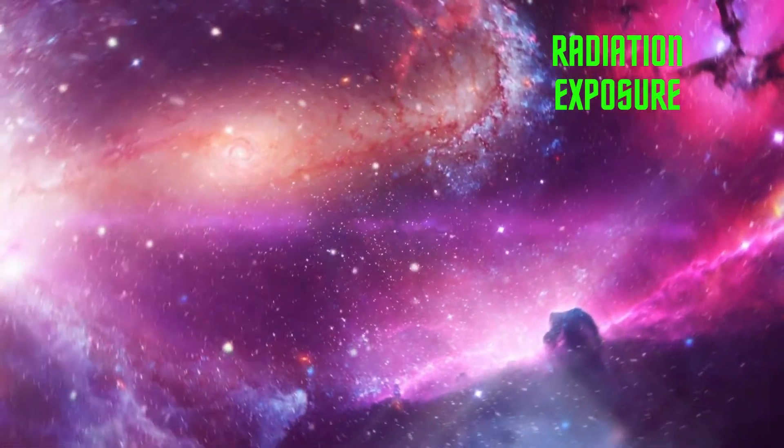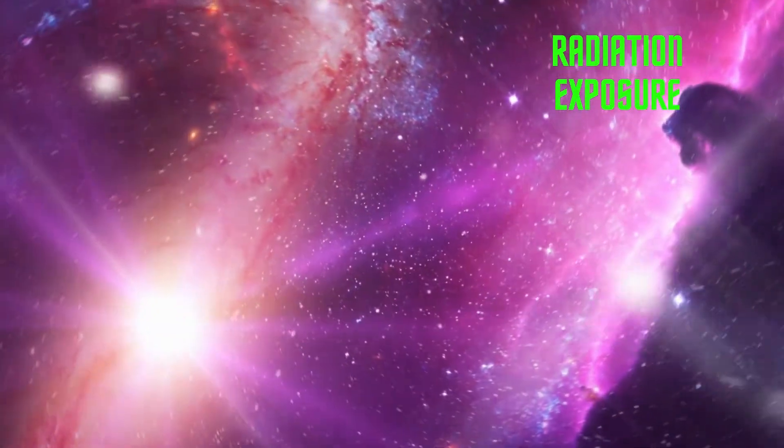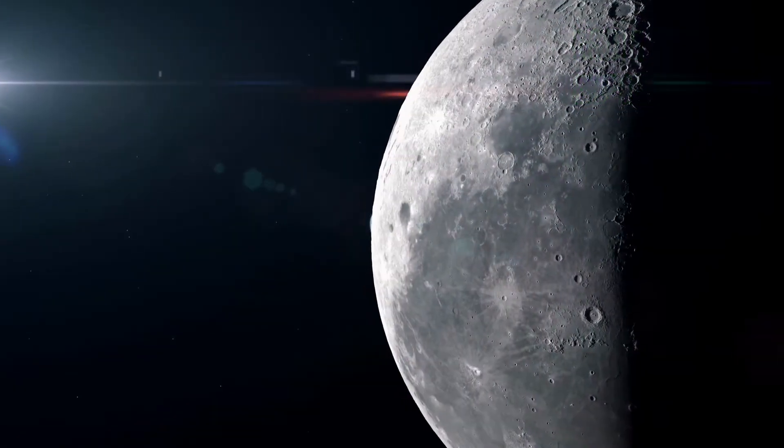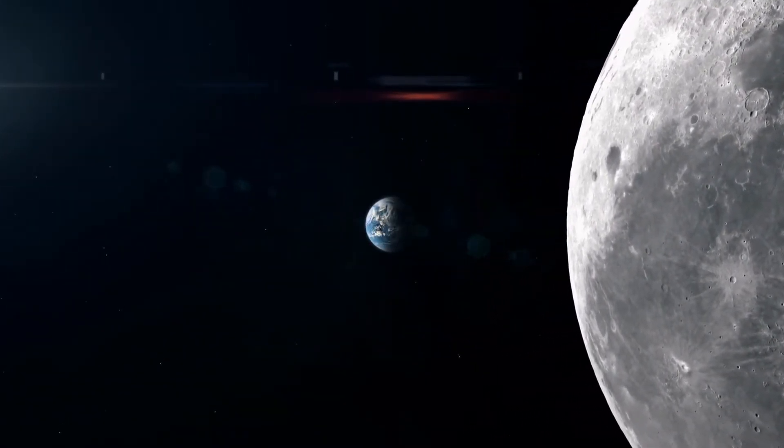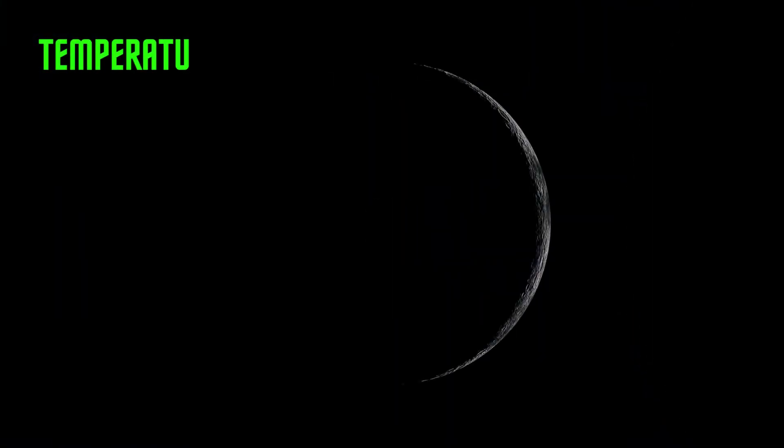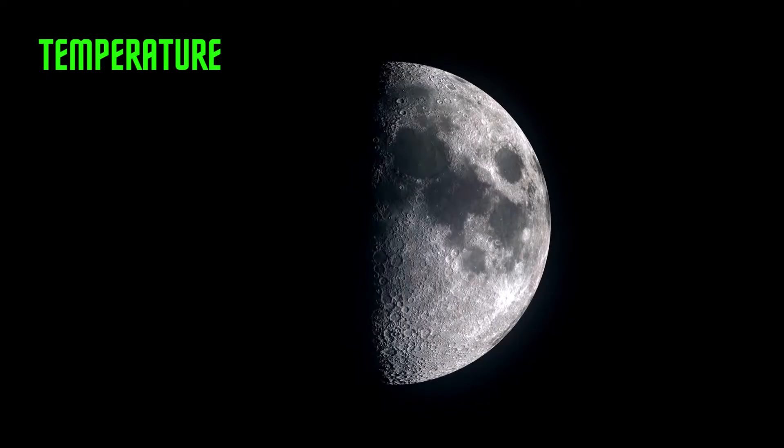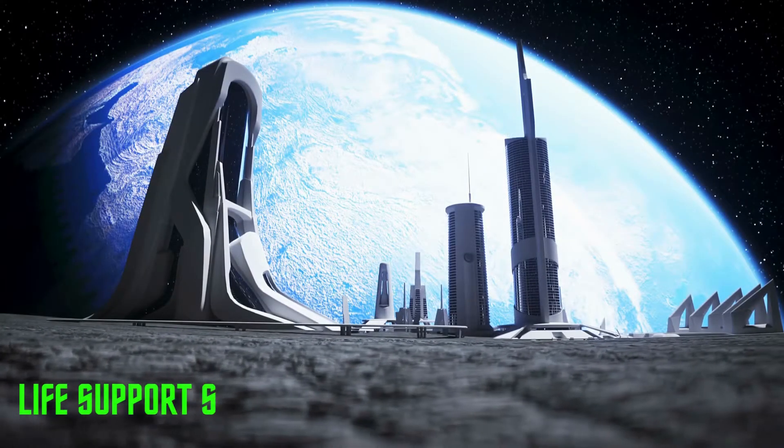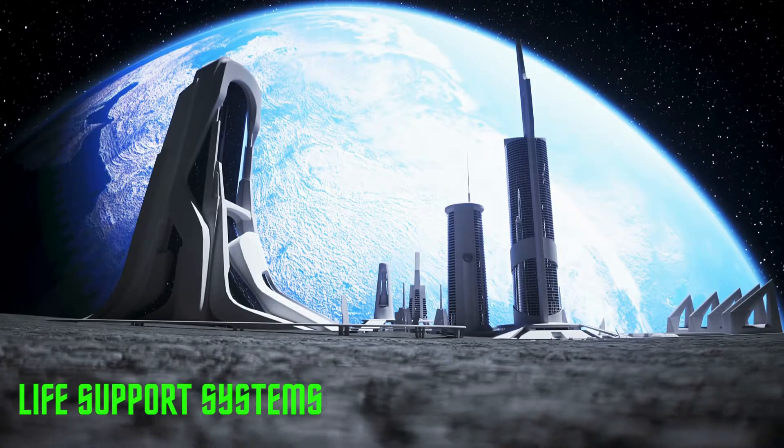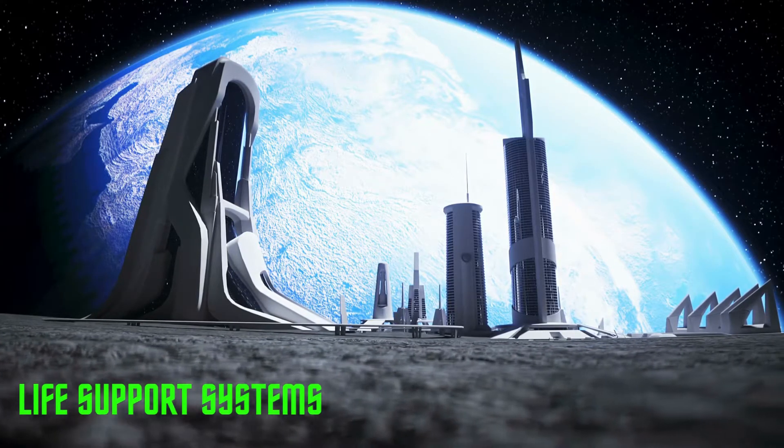We will need to overcome some obstacles to be able to colonize the Moon, such as radiation exposure. The Moon lacks a protective atmosphere, exposing astronauts to harmful radiation from the Sun and cosmic rays. Lunar surface temperatures vary drastically, ranging from scorching heat during the lunar day to freezing cold at night. Creating a self-sustaining Lunar Outpost requires developing closed-loop life support systems capable of recycling resources such as air, water, and waste.